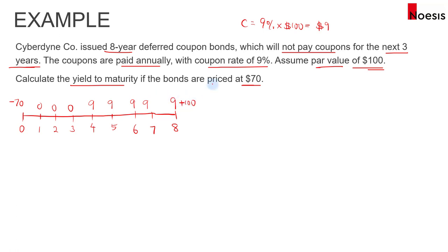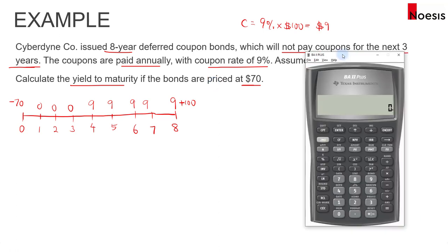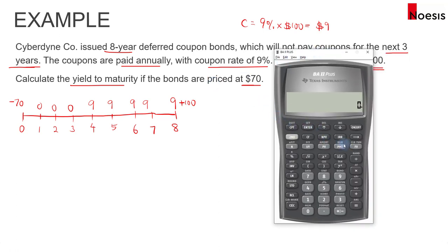We'll use the financial calculator to input the cash flows. For this purpose, you will not be able to use the TVM or time value of money worksheet because the coupons are not paid out every year.